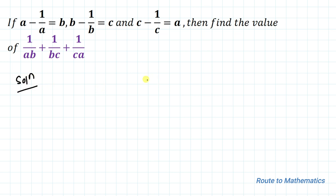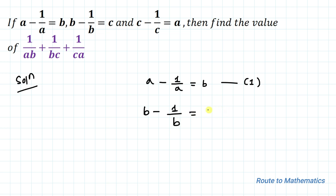Our first equation is a minus 1 by a equals to b — let's take it as equation 1. Our second equation is b minus 1 by b equals to c — equation 2. And our third equation is c minus 1 by c equals to a — equation 3.